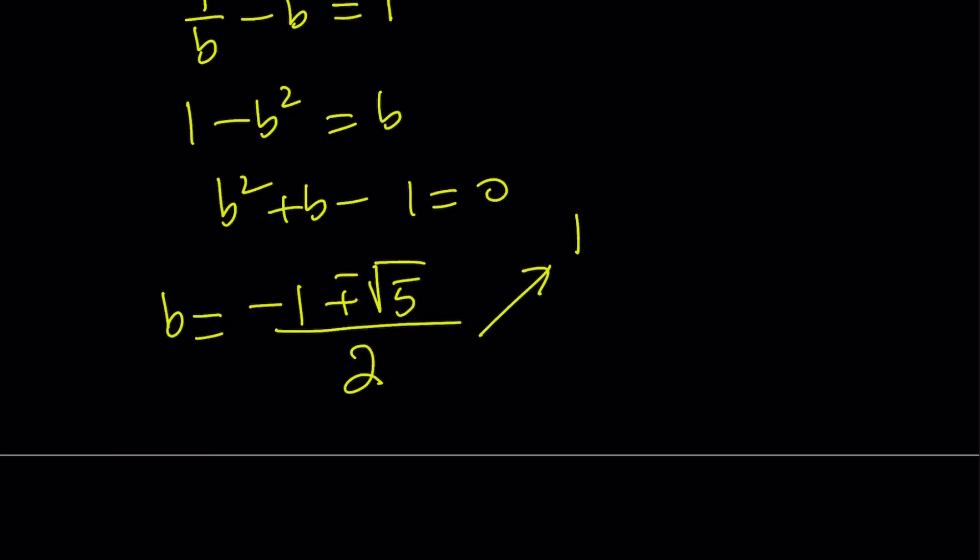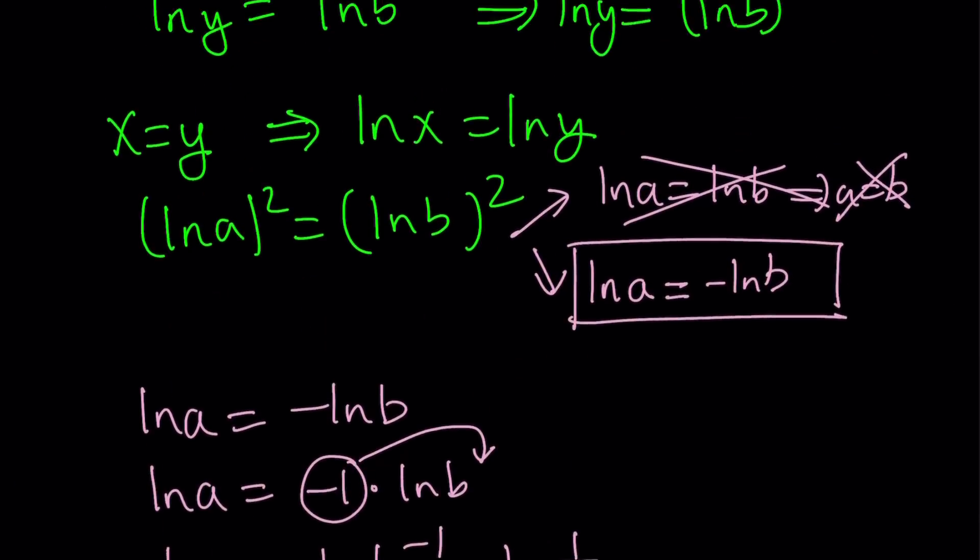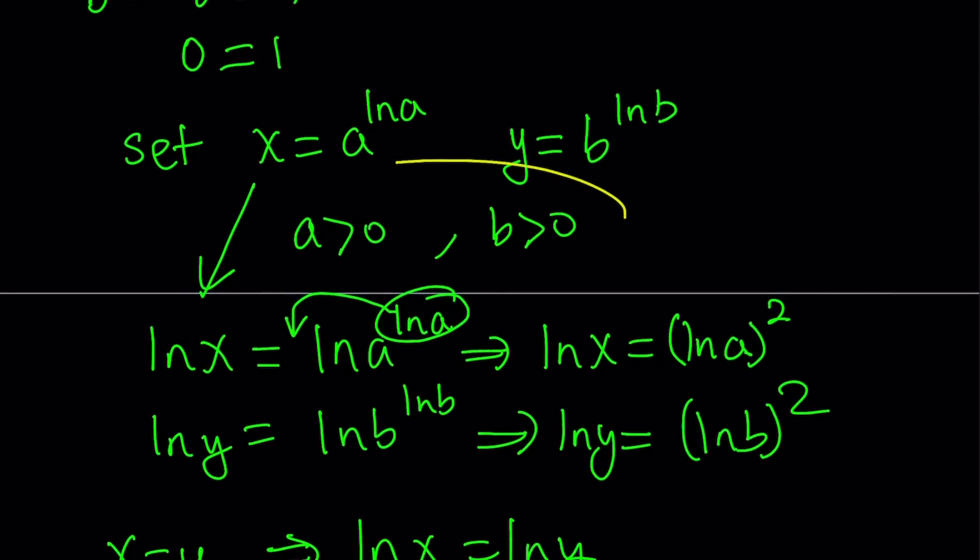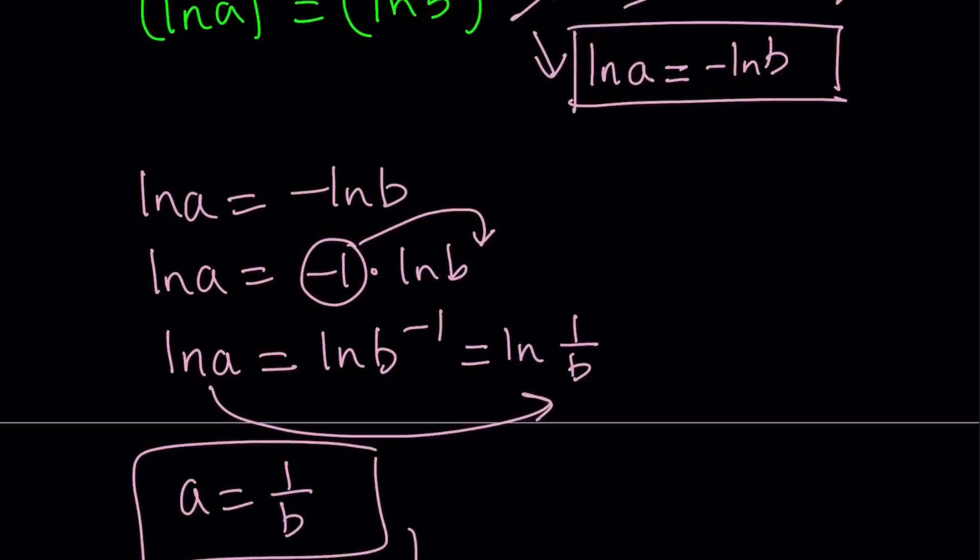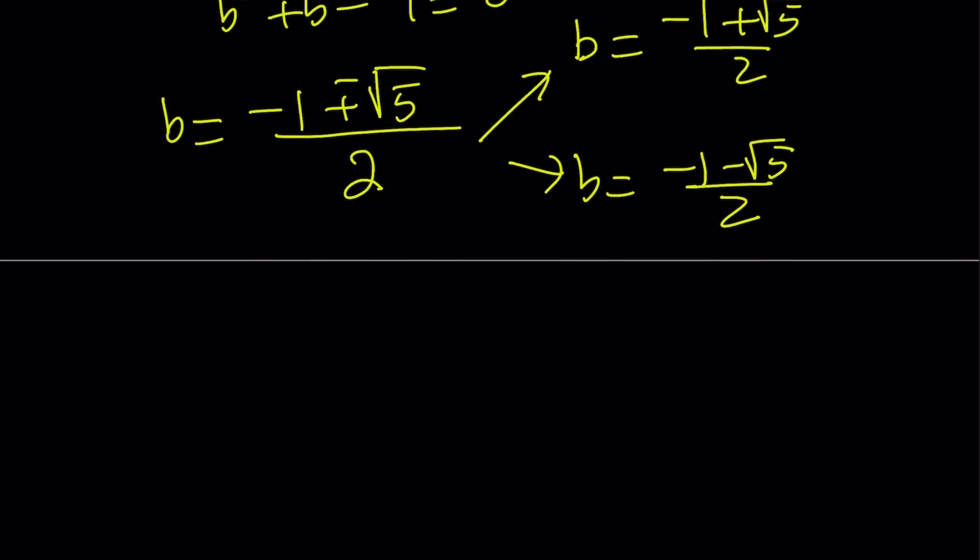So here's the thing. We can split it up into two solutions. b can be written as negative 1 plus root 5 over 2, or b equals negative 1 minus root 5 over 2. Now, here's the problem. At some point, we said that, hey, a and b both have to be positive, right? Okay. So the second solution actually violates that rule, because negative 1 minus root 5 over 2, obviously, clearly, is less than 0, right? So we're not going to be able to take that. But the other one, the other solution, is okay.